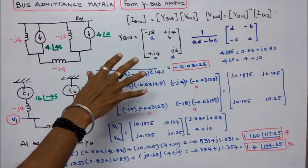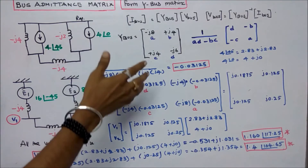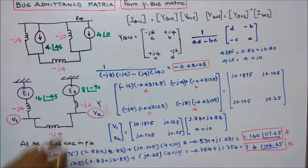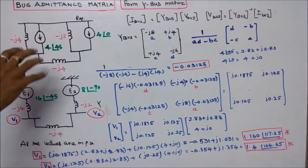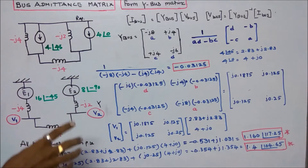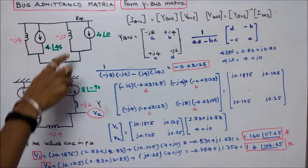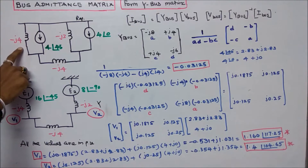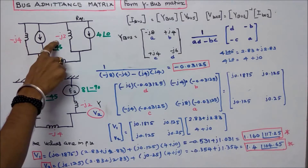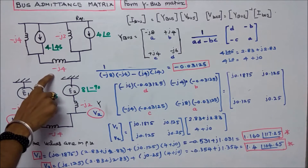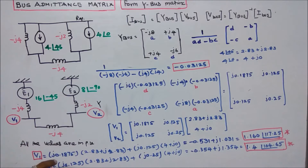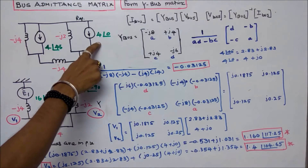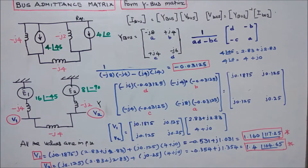In this class, we work out one problem on bus admittance matrix — the Y-bus matrix for a given system. This system consists of two current sources and three inductances: minus J4 per unit, minus J2 per unit, and minus J4 per unit. The currents are 4 angle 45 degrees and 4 angle 0 degrees.